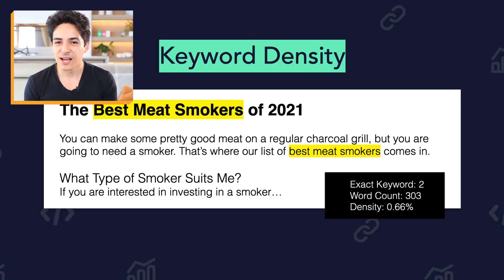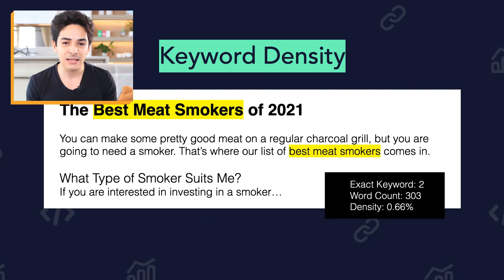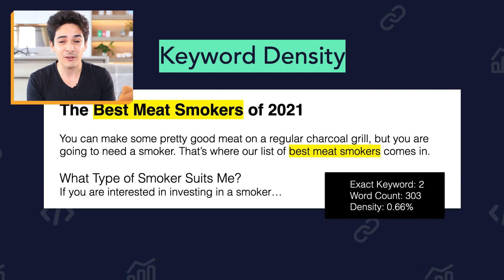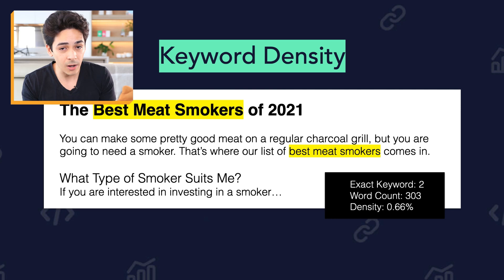Moving on to keyword density — something a little more advanced and nuanced. Keyword density measures how often the keyword appears in your content as a percentage. If the keyword appears 10 times in 100 words, that's 10% — way too much. If it appears 10 times in 10,000 words, that can actually be reasonable or even low. It depends on the content, and that's what keyword density is measuring: how much it's used within your content as a percentage.